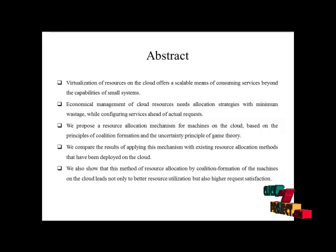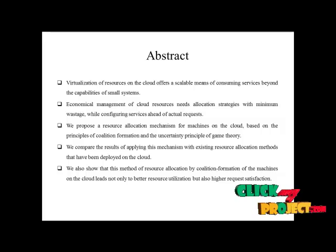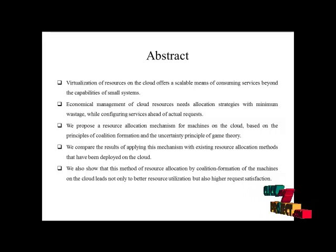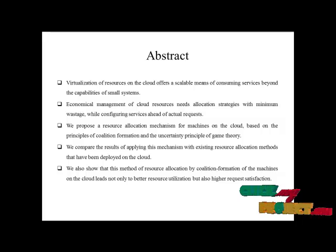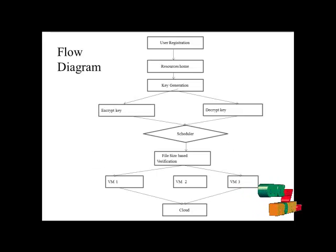This is our abstract. The virtualization of resources on the cloud offers a scalable means of consuming services beyond the capabilities of small systems. Economical management of cloud resources needs allocation strategies with minimum wastage while configuring services ahead of actual requests. We propose a resource allocation mechanism for machines on the cloud based on the principles of collation mechanism and the uncertainty principle of game theory. We compare the results with existing resource allocation methods deployed on the cloud, and show that this method leads not only to better resource utilization but also higher request satisfaction.